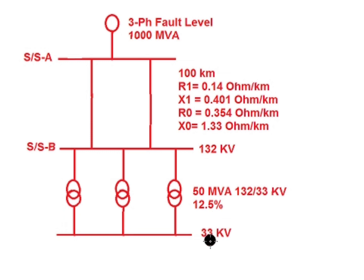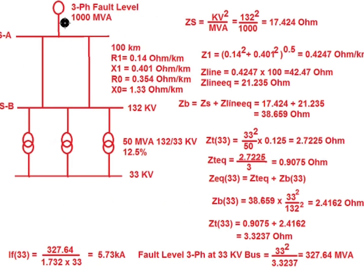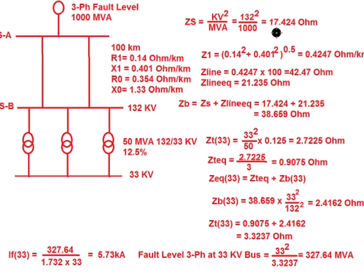We need to find the fault level at the 33 kV bus, given that the fault level at substation A is known. Since the three-phase fault level at substation A is 1000 MVA at the 132 kV bus, we can calculate the source impedance: Zs = kV² / MVA = 132² / 1000 = 17.424 ohm.